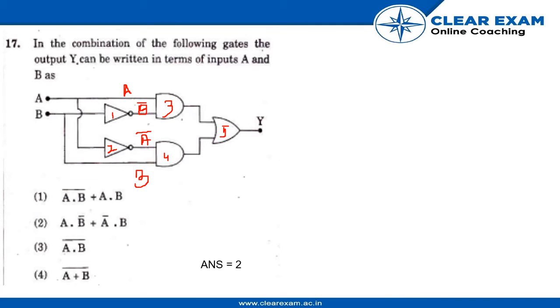Now gates 3 and 4 will give output to gate 5. So we have numbered the gates as 1, 2, 3, 4, 5. Gate 1 and gate 2 are NOT gates. They invert the input given to them.